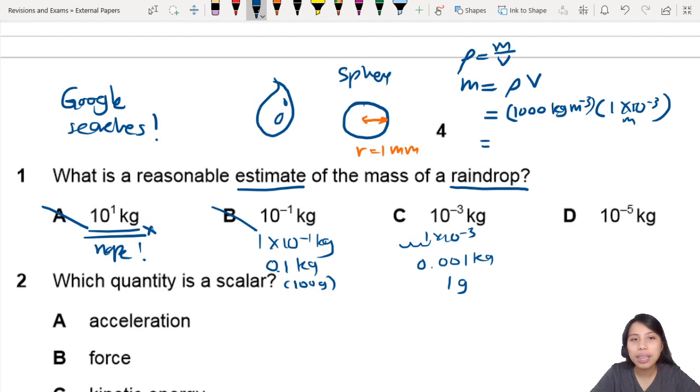This one, times 10 negative 3. Yeah, common mistake that I made here. 1 times 10 to the negative 3, but it's millimeter cube. In other words, if I'm trying to find volume, I need to calculate 4 pi r cube. So let's redo this.